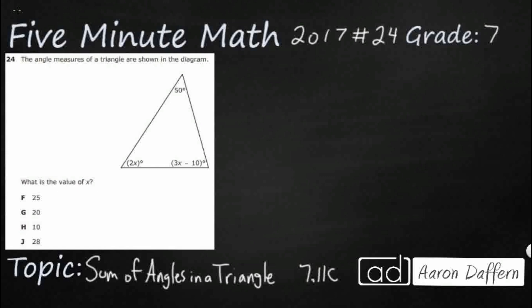We have this triangle here and we've got some angles, but look we've got 50 degrees, this angle here is 2x degrees, and then we've got 3x minus 10. So we have to know something that is not provided for us. We need to know that the sum of angles in the triangle is 180 degrees.